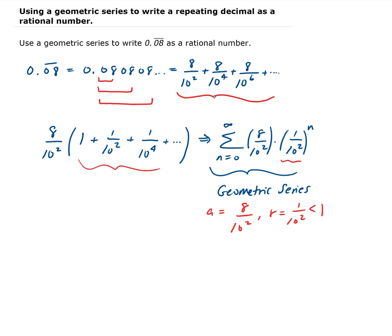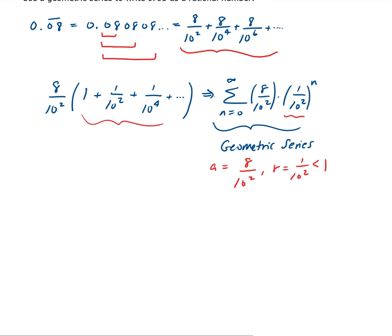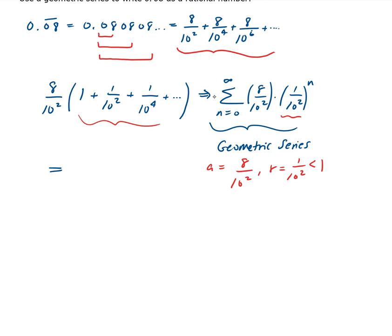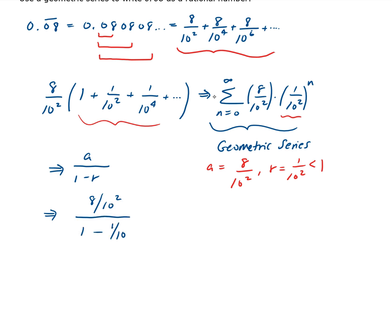Since r is less than 1, this series is going to converge. It's in the form of a over 1 minus r, so that's going to give us 8 over 10 squared divided by 1 minus 1 over 10 squared.